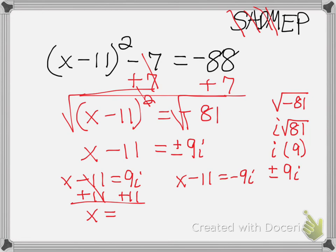Remember, 9i has an i, but 11 doesn't, right? They're not like terms. So you cannot add them together. You'll just write it out. 9i plus 11.